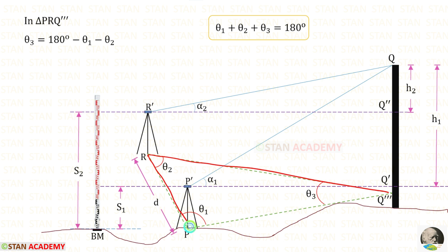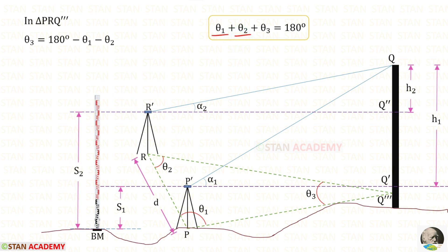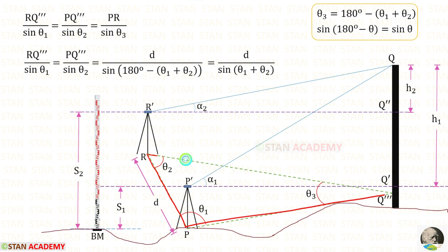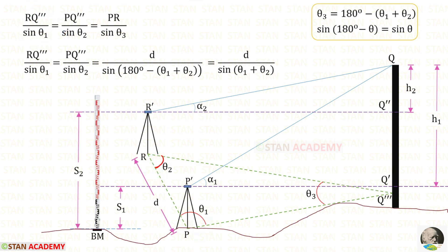In this triangle, the sum of angles equals 180 degrees. So theta 3 equals 180 degrees minus the bracket of theta 1 plus theta 2. Now applying the sine rule to the same triangle: R Q triple dash upon sine theta 1 equals P Q triple dash upon sine theta 2, which equals P R upon sine theta 3.